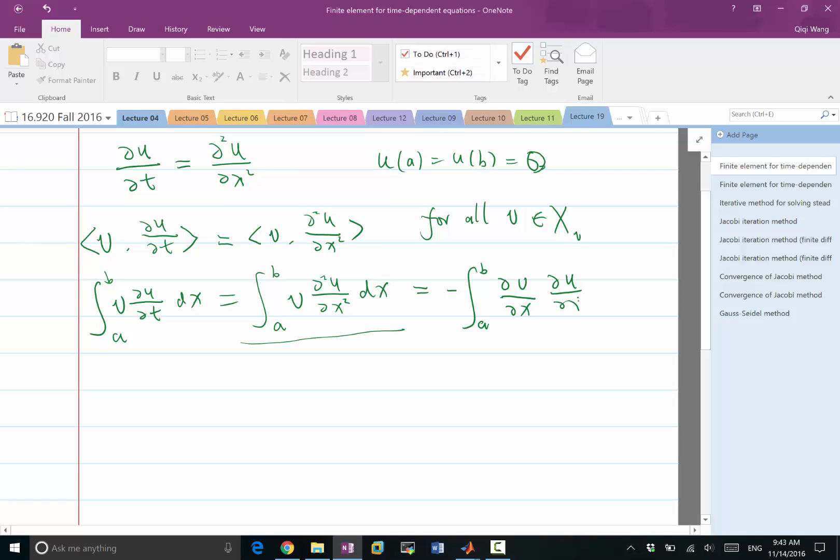the boundary terms get removed through the boundary condition. And we also are removing the second-order derivative. And both u and v have a first-order derivative in this bilinear form. And we also look at the left-hand side and realize that we are integrating only in space, not in time. So the time derivative can be removed, can be pulled out of the integral.